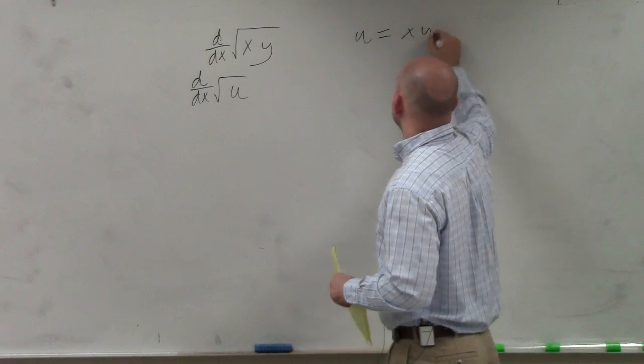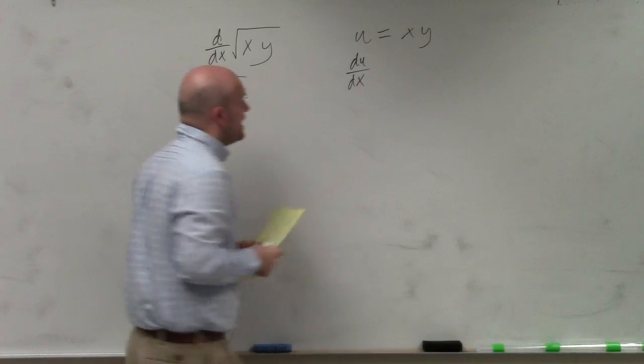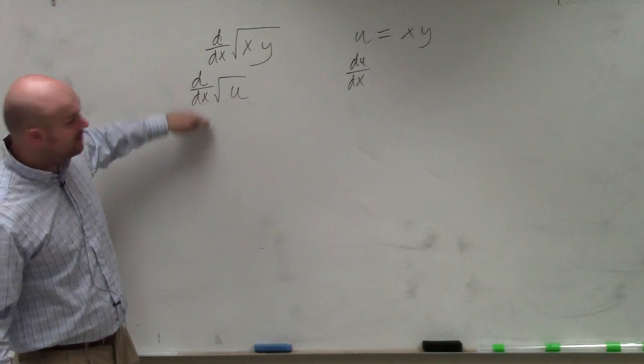So therefore, if we say u is going to be xy, and we want to find du over dx, then we need to, so you're basically saying, all right, I'm doing the chain rule.